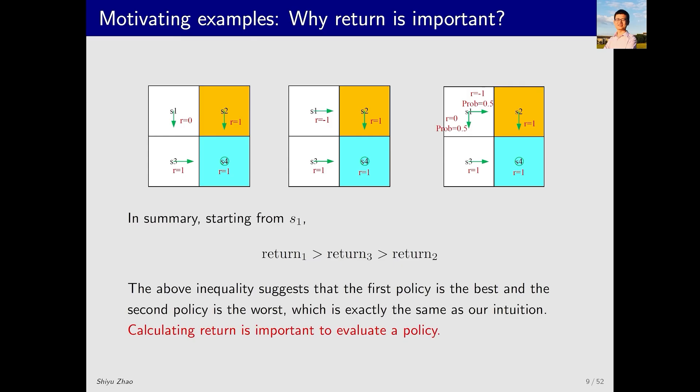Now, let's compare the three return values we just calculated. Return 1 is gamma divided by 1 minus gamma. Return 2 is negative 1 plus gamma divided by 1 minus gamma. Return 3 is negative 0.5 plus gamma divided by 1 minus gamma. It is clear that return 1 is the largest. Return 2 is the smallest because it includes a negative 1. Return 3 is in the middle because it includes a negative 0.5. Therefore, the mathematical inequality we have derived matches our intuition. The first policy is the best, the second is the worst, and the third is in the middle. So we establish a relationship between mathematics and intuition. The key to this relationship is return. Hence, return is very important as it can be used to evaluate given policies.